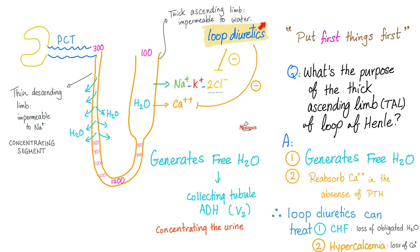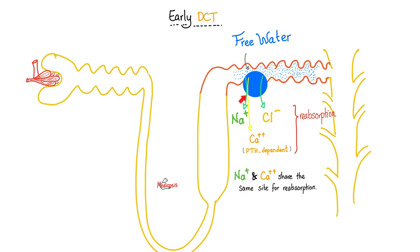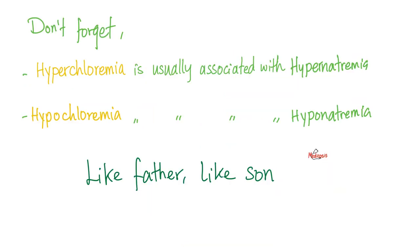What do loop diuretics do? They inhibited the 1-sodium-1-potassium-2-chloride channel, making me unable to reabsorb chloride back into the blood. All of that chloride will end up in the urine. I end up with hypochloremia. How about thiazide diuretics? They inhibited the sodium chloride channel, making me unable to reabsorb chloride back into the blood. Chloride will end up in the urine - hypochloremia. Except hydrochlorothiazide, which can lead to hyperchloremia, because chloride is in the compound. Again, please do not forget, like father, like son.